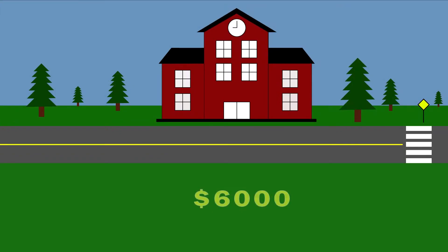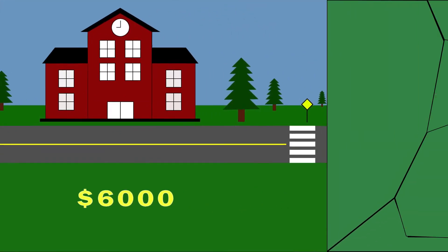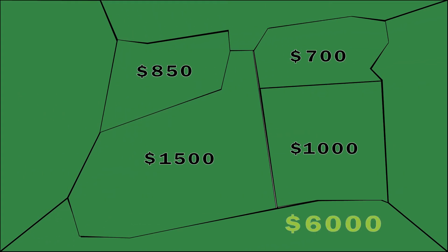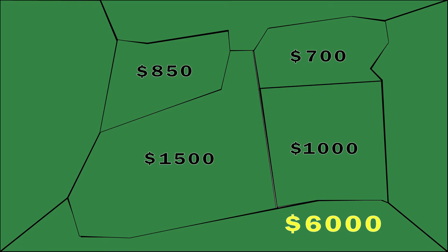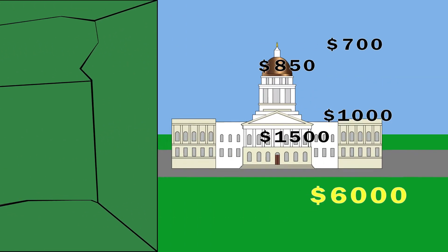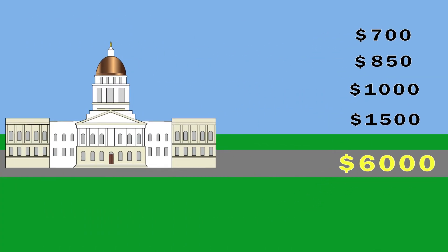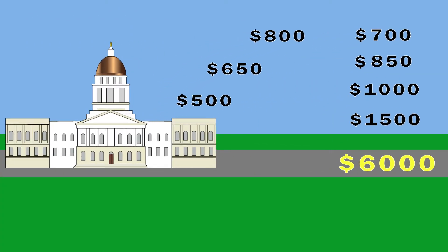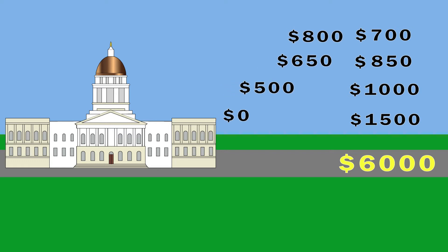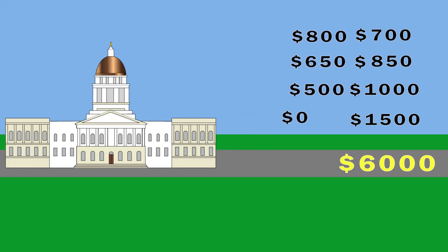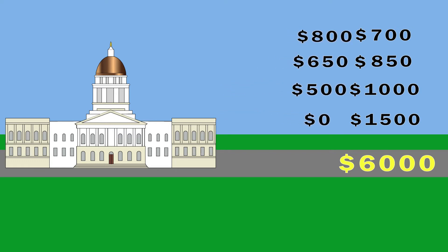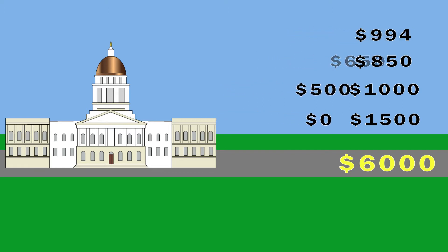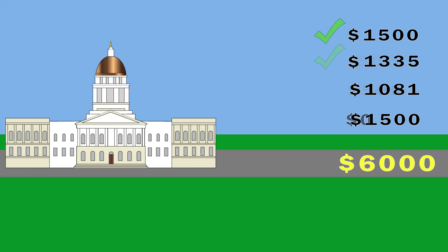We then compare the cost of education with how much the community should be able to raise based on the mill rate. If the amount the community can raise is lower than the cost of education, the state will contribute the remainder.